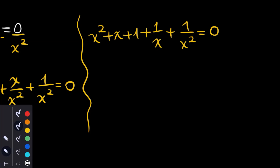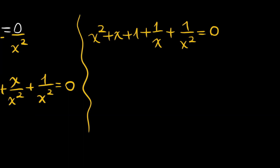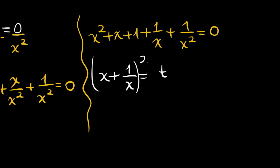This is nice since we will use a property of x plus 1 over x, and x squared plus 1 over x squared. Let me call x plus 1 over x equal to t, and square both sides.